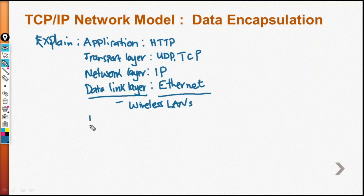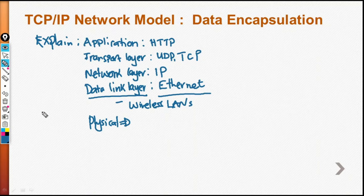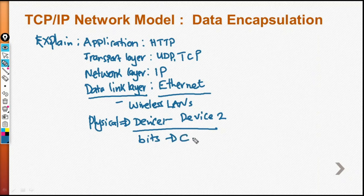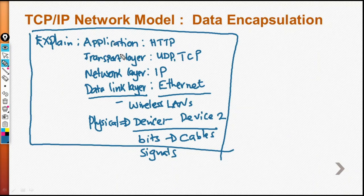The last layer was the physical layer. This is the layer that sends data from device one, which is the sending device, to device two, which is the receiving device. This happens in the form of bits, and these bits are transferred over electrical cables in the form of signals.